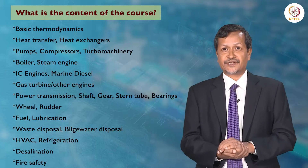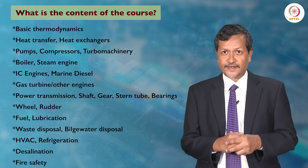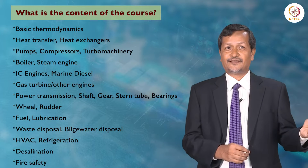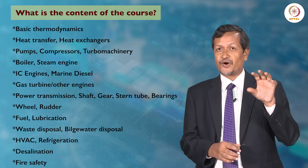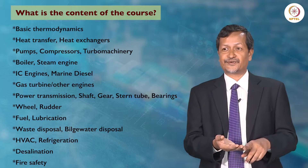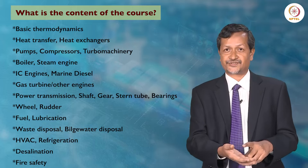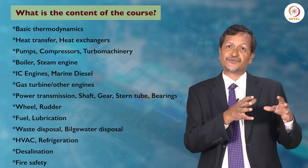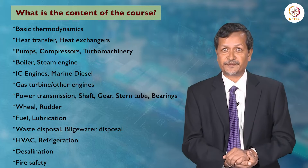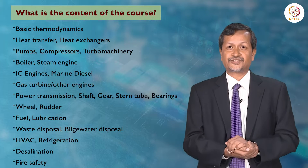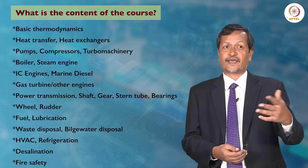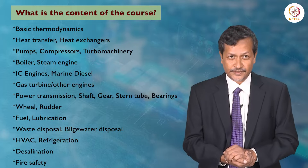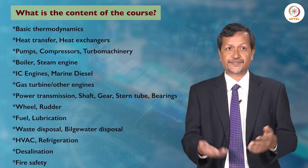IC engine — internal combustion engine — you are very much familiar with it. For example, cars, buses, trucks, and even aircraft need a power source. IC engines are used for many surface-moving vehicles. Aircraft normally use a gas turbine-based system. All those machinery types are used for shipping applications or offshore platform applications. For example, INS-class Indian ships use gas turbines. In many cases, nuclear power plants are also used as small power sources — for example, in submarine systems.